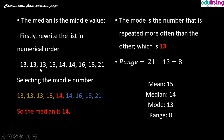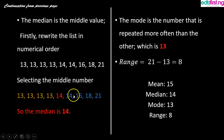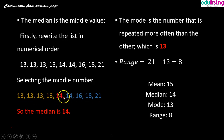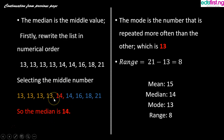To select the middle number, count from the beginning: one, two, three, four, and also from the back: one, two, three, four. There are four numbers from the front and four from the back. The number remaining in the middle is the median, which is 14. Always remember to rearrange all values from lowest to highest before finding the median.